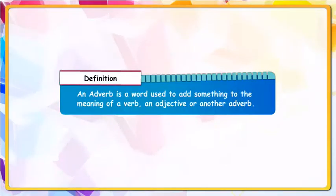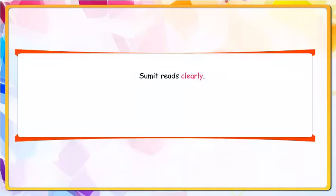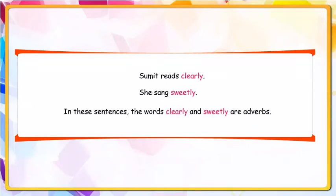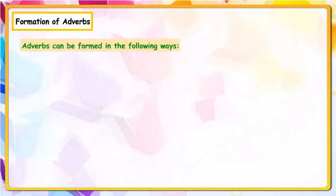Chapter 14: The Adverb. Definition: An adverb is a word used to add something to the meaning of a verb, an adjective, or another adverb. Example: Sumit reads clearly. She sang sweetly. In these sentences, the words 'clearly' and 'sweetly' are adverbs.